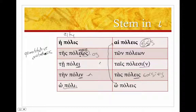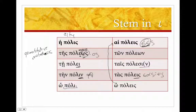So: 'polis, poleos, polei, polin, polis / poleis, poleon, polesin, poleis'. The strange things to note are: quantitative metathesis giving you the 'eos', the 'nu' in the accusative, the contraction in the nominative and accusative plural — and otherwise it's normal.